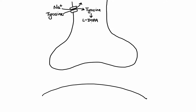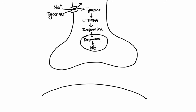Next, L-DOPA is converted to dopamine by the enzyme aromatic amino acid decarboxylase. The second step involves transport of dopamine into the synaptic vesicle, where the enzyme dopamine-beta-hydroxylase converts dopamine to norepinephrine.